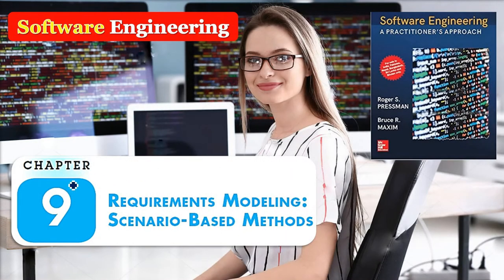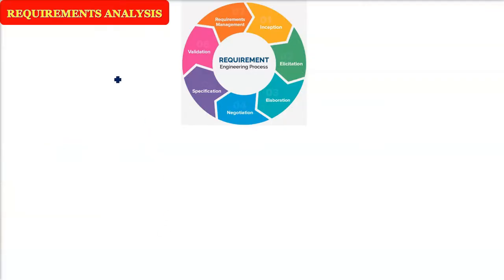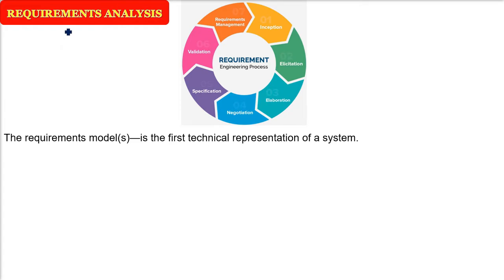In software engineering, we are taking chapter number nine: requirements modeling, and we'll talk about scenario-based methods. The requirement modeling has come from the understanding of requirement, requirement gathering, and requirements analysis. When you have generated the requirement — what the user wants, what are the stakeholders' requirements — then you have to analyze it. The first draft of requirements has to be analyzed and then we have to make the models.